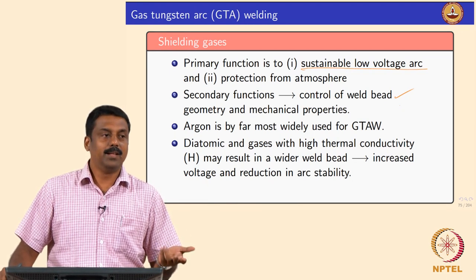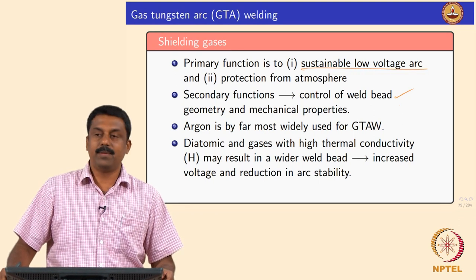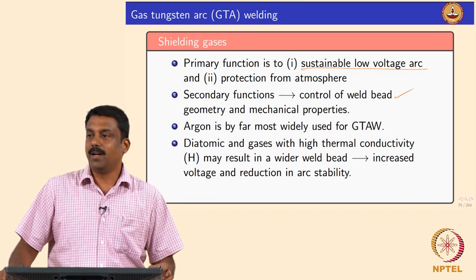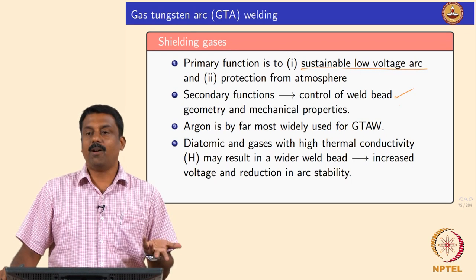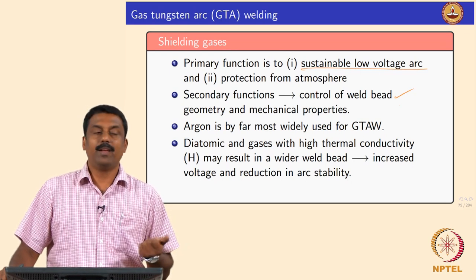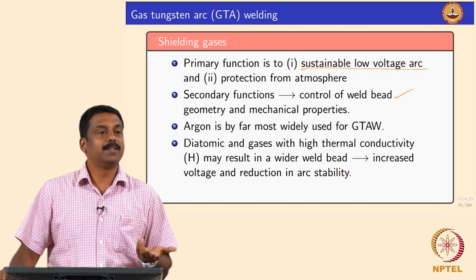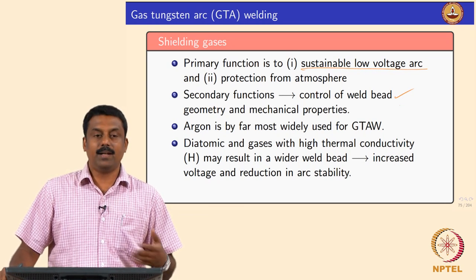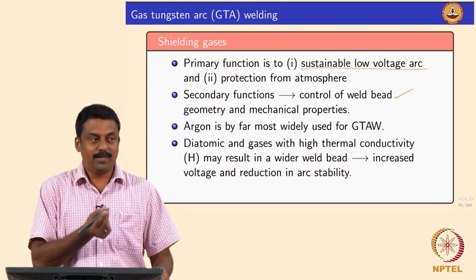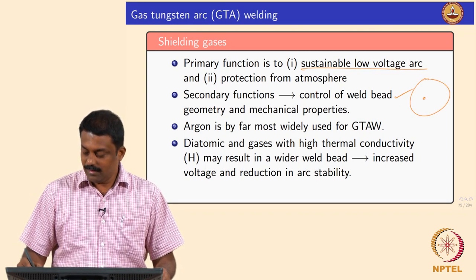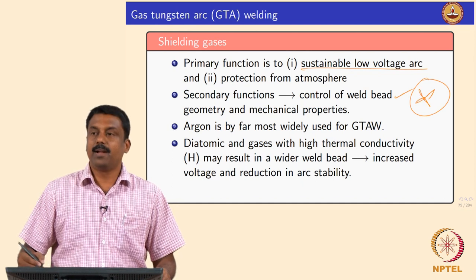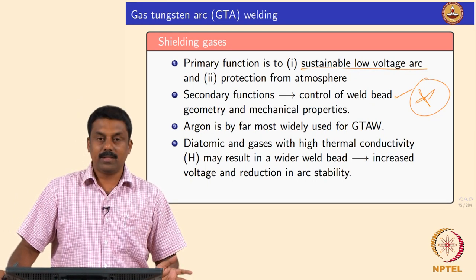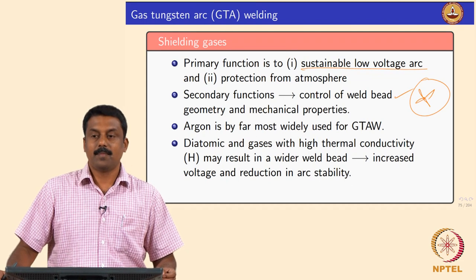One classical example is the use of oxygen in low- to medium-carbon steel welding. We add some amount of oxygen with the argon, for example, to induce oxide inclusions. The moment you induce oxide inclusions, the acicular ferrite nucleates at those oxide inclusions. Once you have the oxide inclusions, you can nucleate acicular ferrite, and if you have that microstructure, the toughness increases significantly.